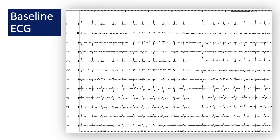The baseline ECG shows an atrial tachycardia with a cycle length of 280 ms. Looking at the precordial leads, we see a positive concordance of flutter waves or P-waves of the atrial tachycardia, which shows an origin from the left atrium.